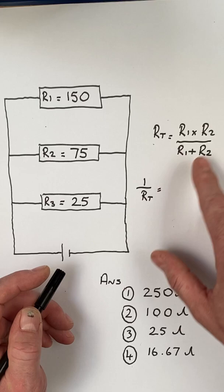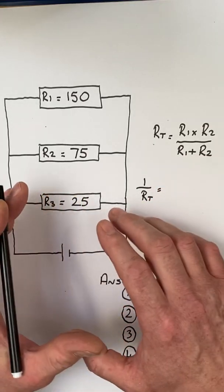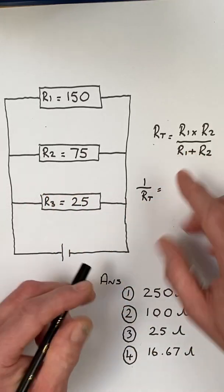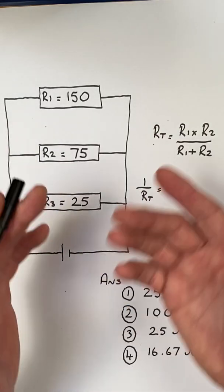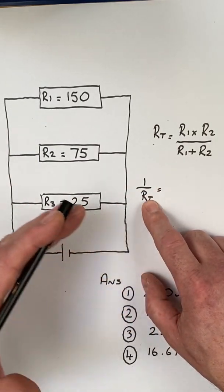We've got product over sum. When we had two resistors connected in parallel, we could use that. We've got three. There's something to do with a formula at 1 over RT, but your mind's gone blank in the exam.